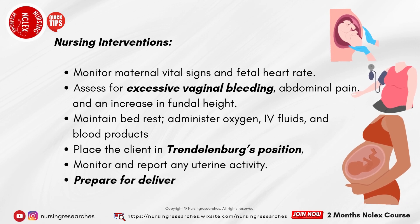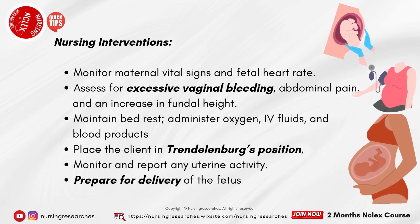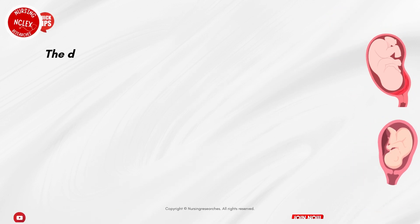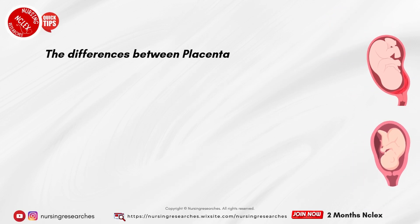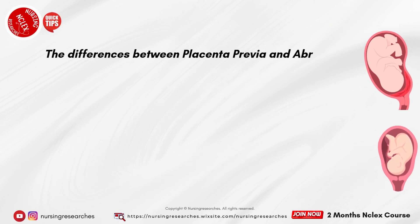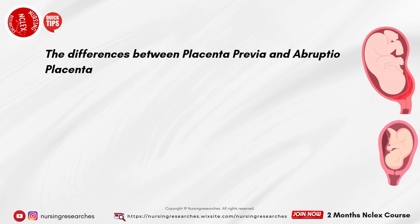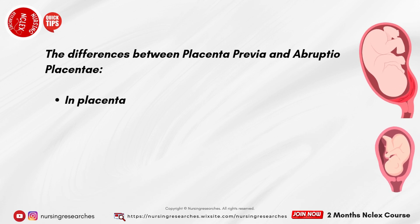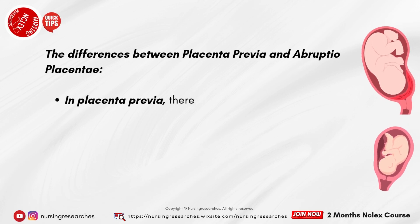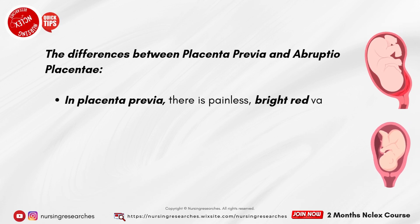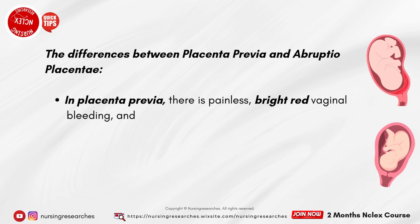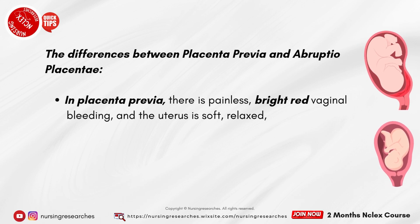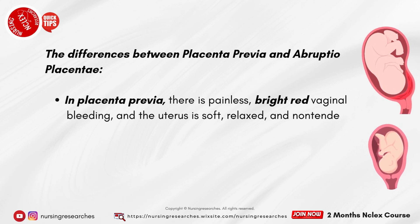Prepare for delivery of the fetus. The differences between placenta previa and abruptio placentae: in placenta previa, there is painless bright red vaginal bleeding, and the uterus is soft, relaxed, and non-tender.